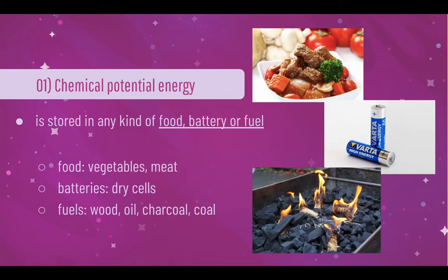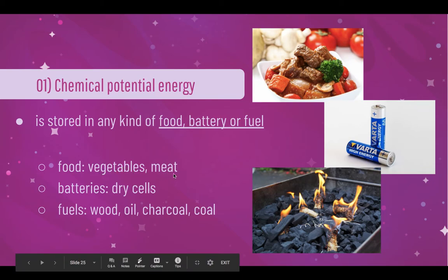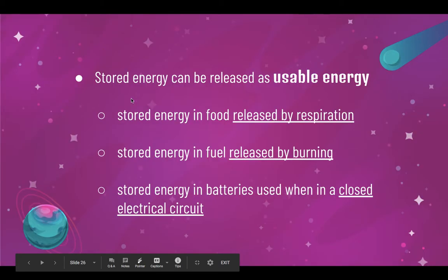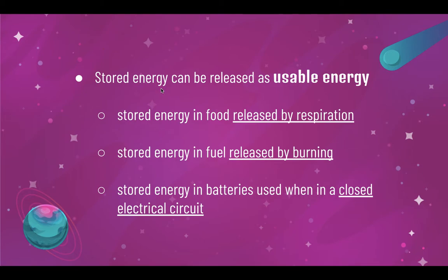Chemical potential energy is stored in any kind of food, battery or fuel. Food includes vegetables and meat. Batteries include dry cells. And fuels include wood, oil, charcoal or coal. This stored energy can be released as usable energy.